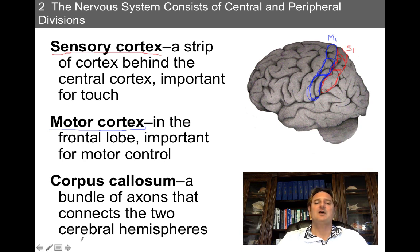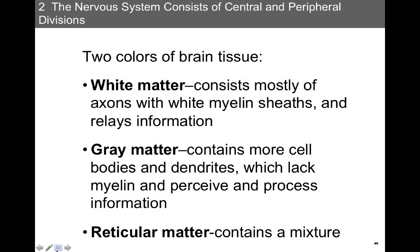The corpus callosum is a bundle of axons connecting the two cerebral hemispheres — it's buried underneath the cortex. There are two colors of brain tissue: white matter and gray matter. White matter consists mostly of axons with white myelin sheaths and typically relays information. Gray matter contains more cell bodies and dendrites which lack myelin, and it perceives and processes information. We also have reticular matter found in the brain stem, which is a mixture — a combination of the two, appearing as a light gray matter.